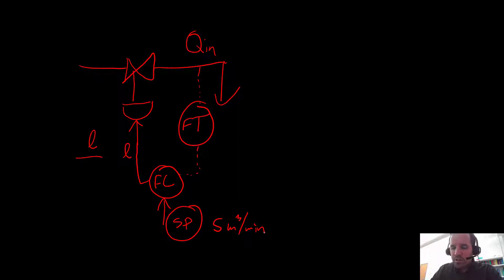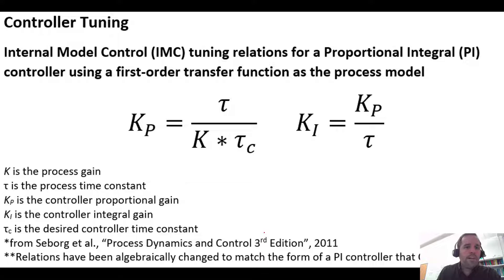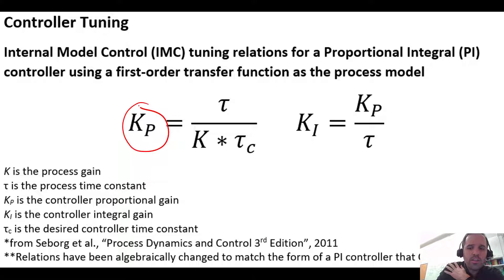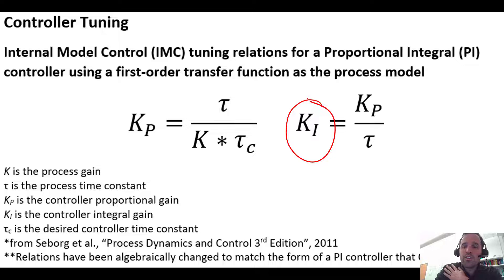There is a whole lot of information on control theory, but we're going to use some very simple tuning — specifically something called Internal Model Control or IMC tuning relations. We're going to use the proportional-integral algorithm; we will not use the derivative, to keep this fairly simple. Our controller has certain parameters we need to define: namely Kp, the controller proportional gain, and Ki, the controller integral gain.